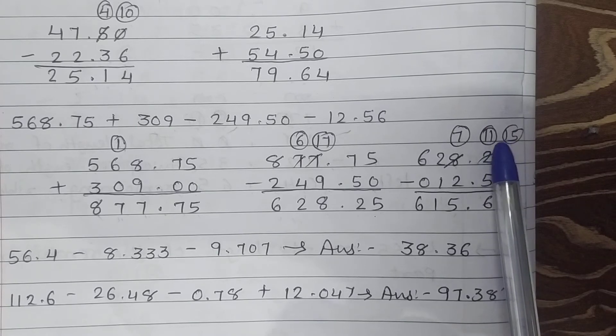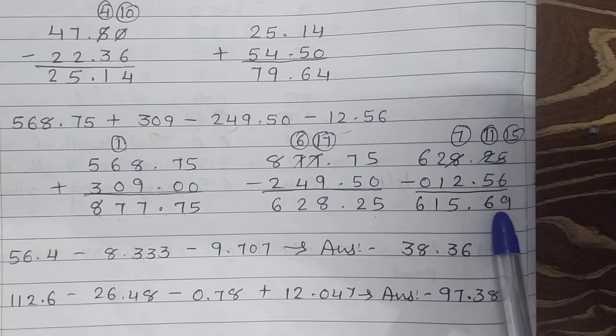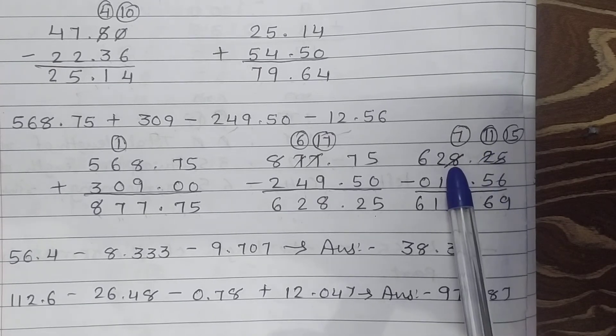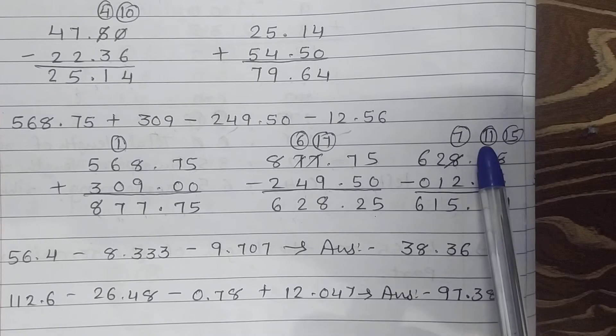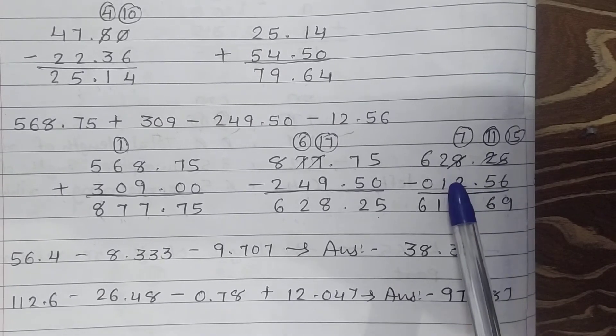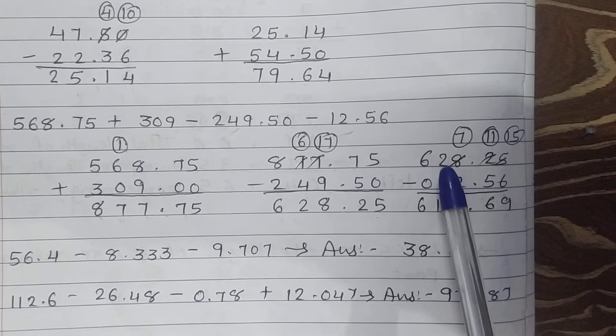10 plus 1 is 11, 11 minus 5 is 6. Point as it is. After taking 10 borrow, number comes 8, cut 8, less than 8 is 7. 7 minus 2 is 5, 2 minus 1 is 1, and 6 minus 0 is 6.